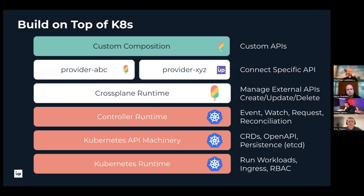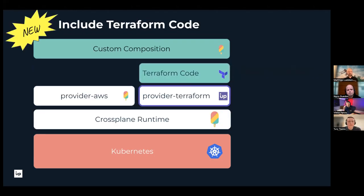As Victor said, you're most likely not starting on a greenfield — you probably already have something. Part of this provider ecosystem is a special type of provider called Provider Terraform. There's also a Provider Ansible and other utility providers, but today we focus on Provider Terraform and how to get existing code in there, how to run it, and how to transition.